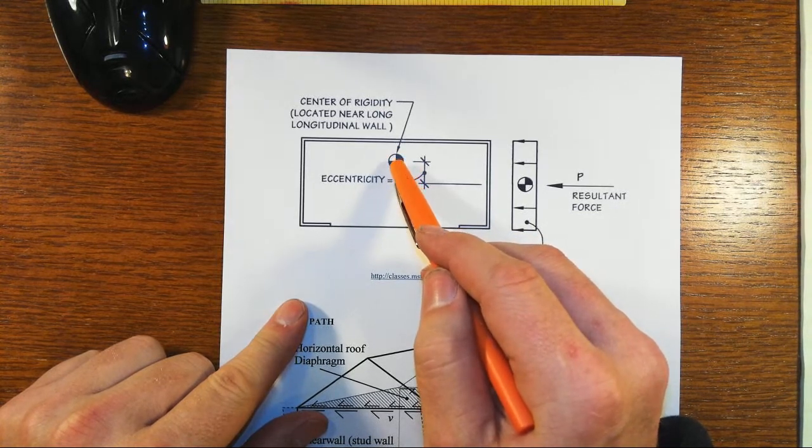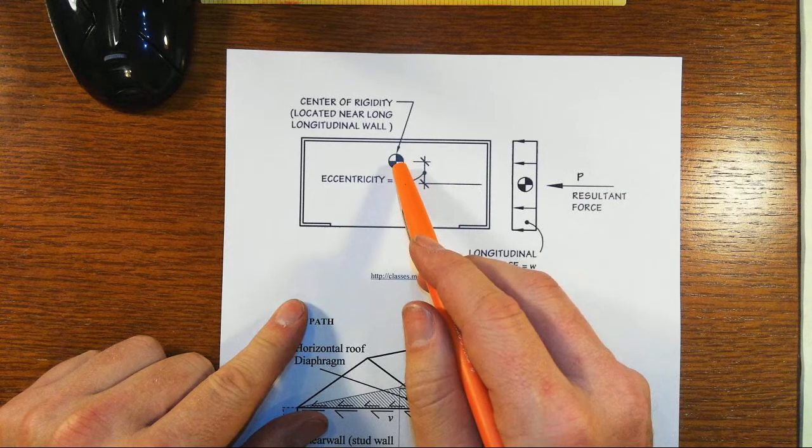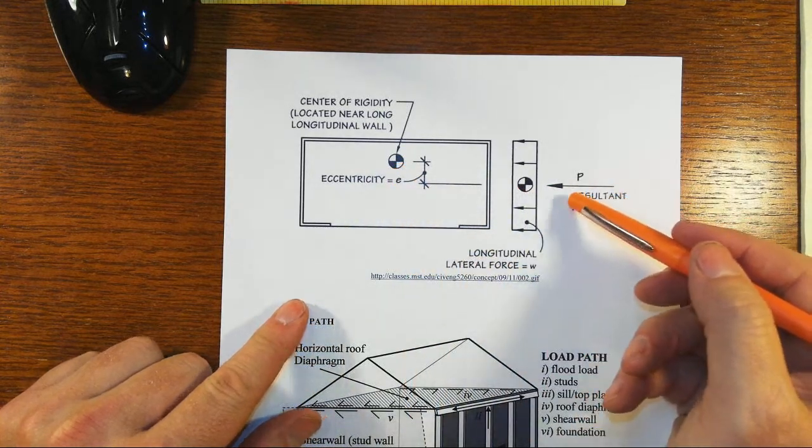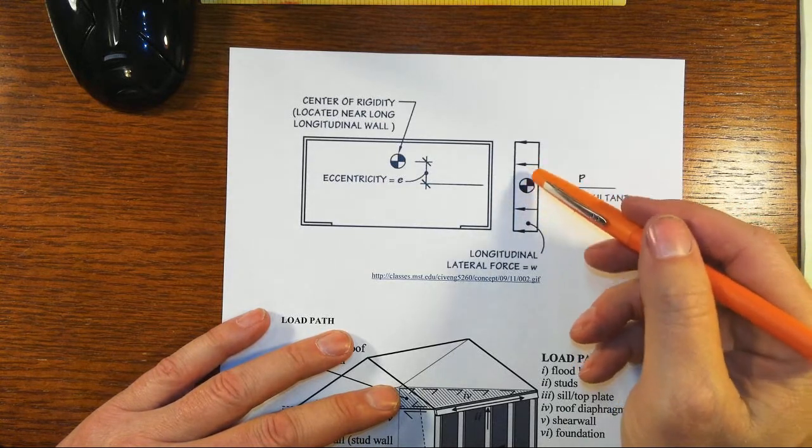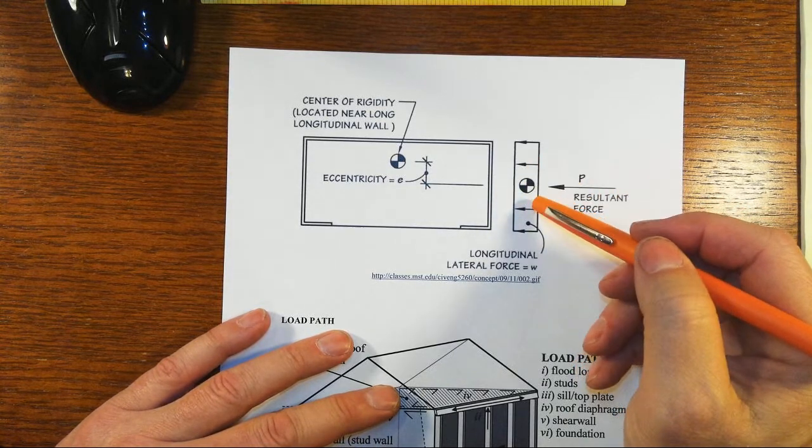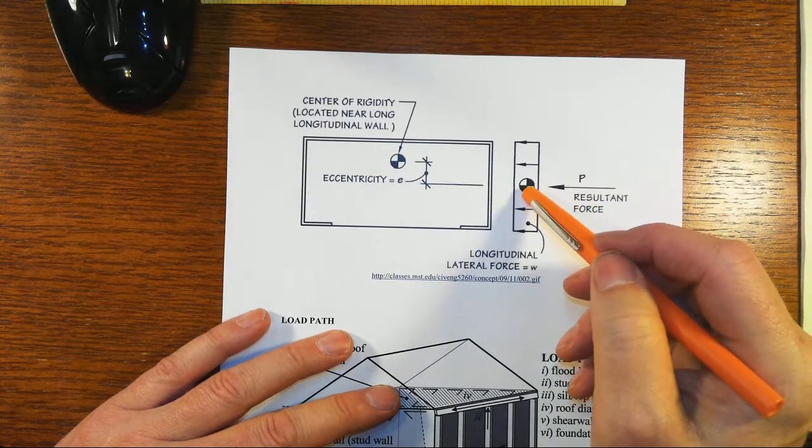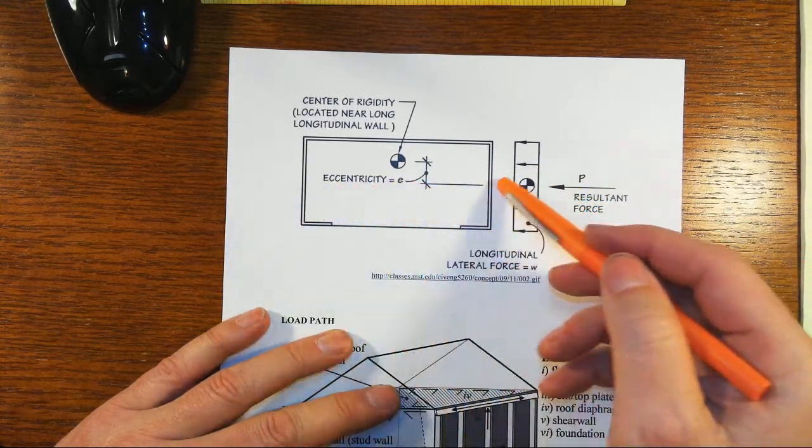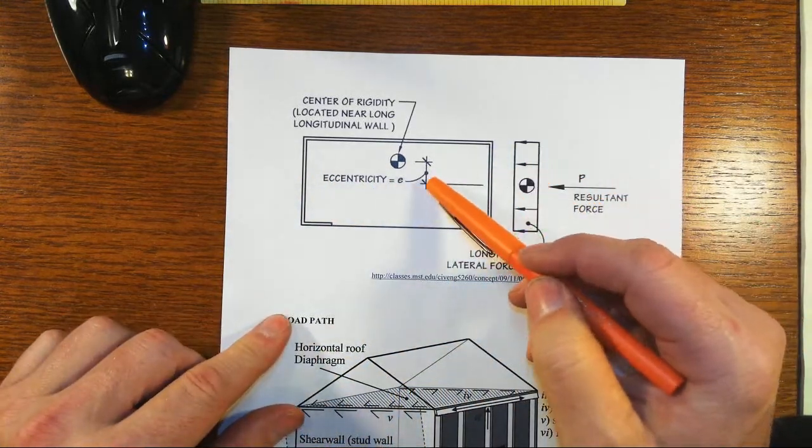And when you're looking here in floor plan, the center of rigidity is going to be way shifted off from, say, maybe the center of the area, whereas this resultant force, typically even if it's a seismic, but especially if it's wind, will be modeled as a relatively uniform force, and its centroid might be right through the geometric plan or centroid of the plan, and we're going to have this eccentricity.